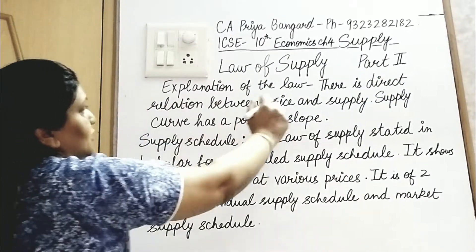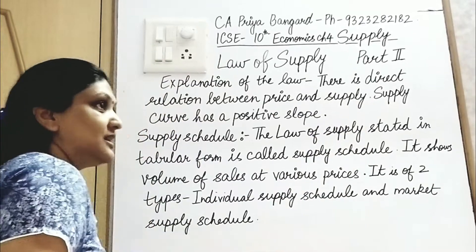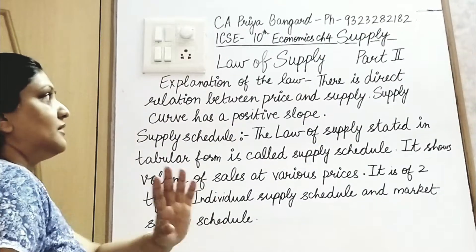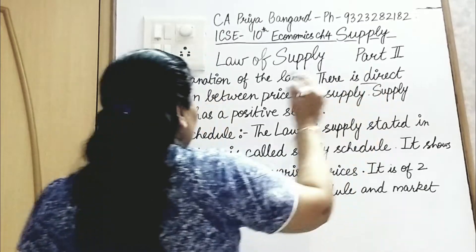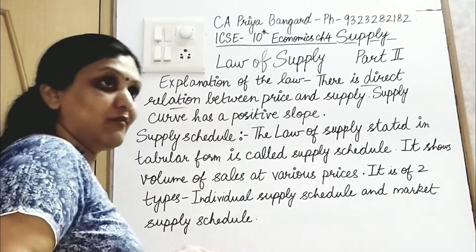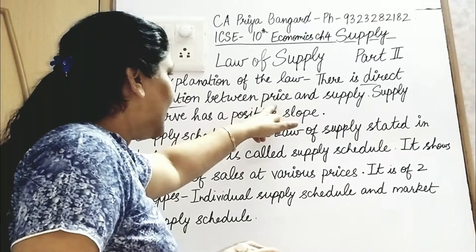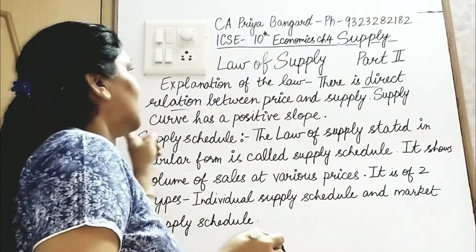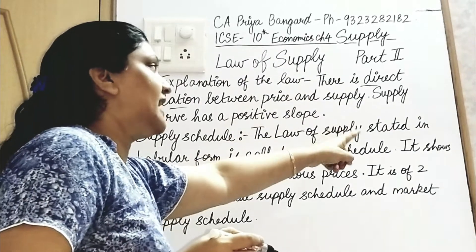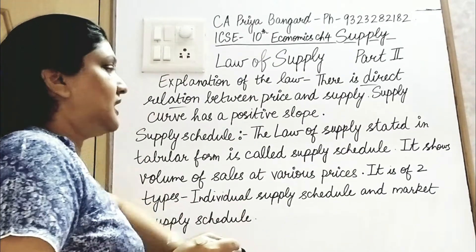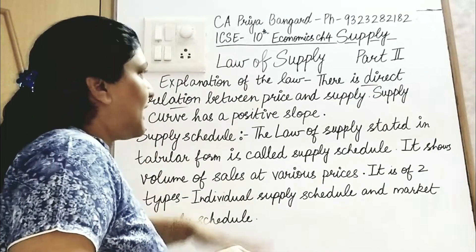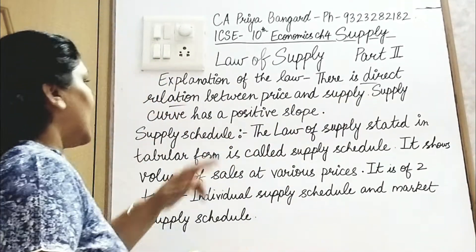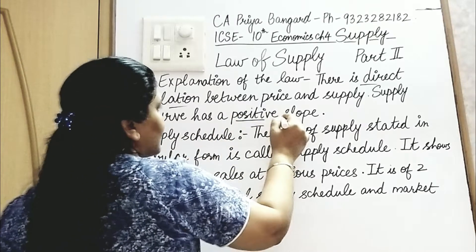Part 2: Explanation of the law. There is a direct relation — keyword: direct relation — between price and supply. Price badegi, supply bhi badegi; price kam hogi, supply bhi kam hogi. The supply curve has a positive slope, which will be shown with a graph in the coming videos.